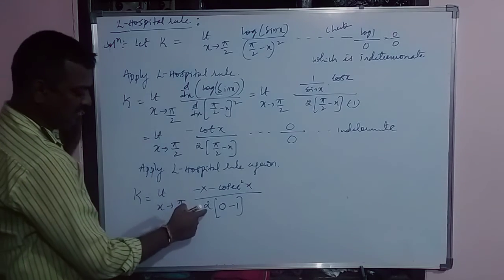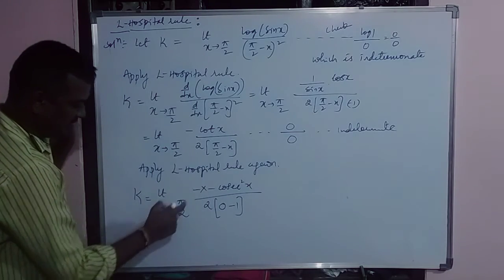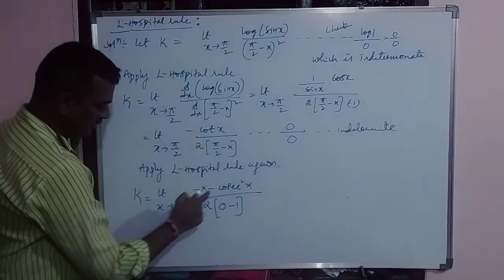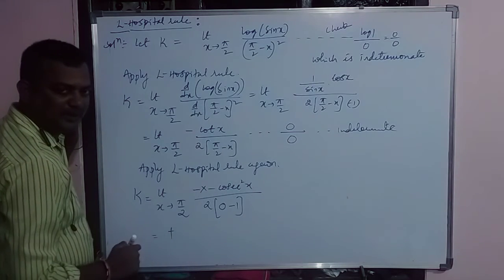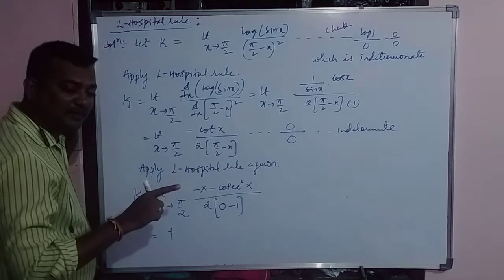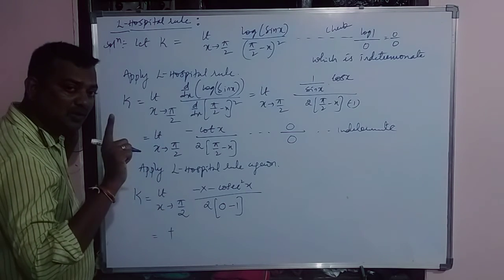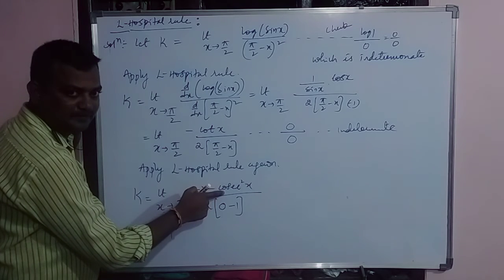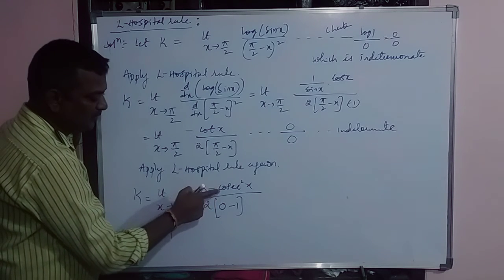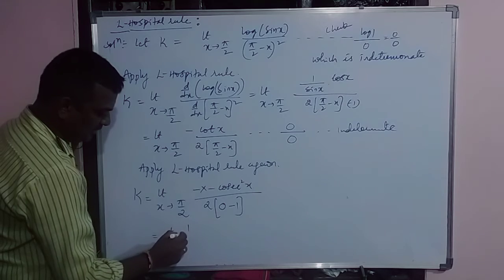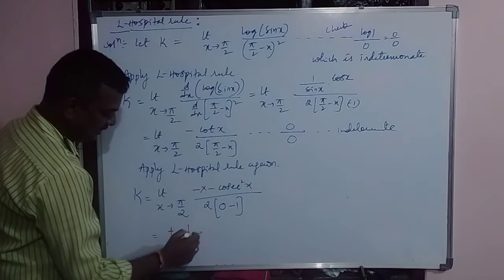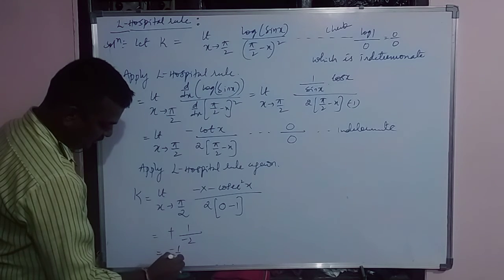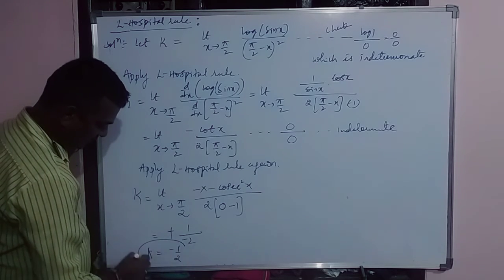Now substitute the limit. Denominator is not equal to 0. So this is minus minus plus. Cosec pi by 2, cosec pi by 2 is same as 1 by sin pi by 2. What is sin pi by 2? 1. 1 by 1 square is just 1 which is 1 divided by 2 into minus 1 is minus 2. This is minus 1 by 2 is the value of k.